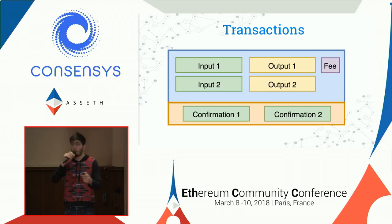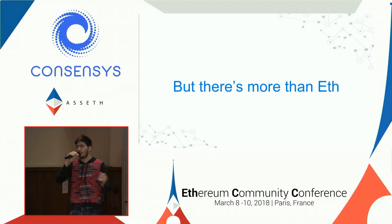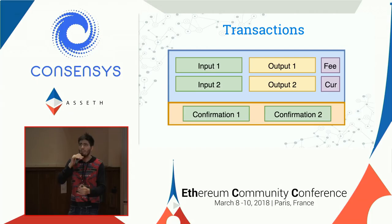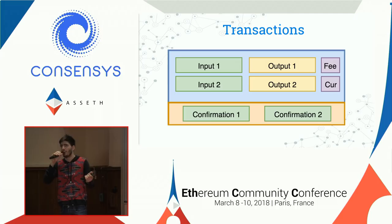With plasma child chain transactions we want to support more than ETH. With the UTXO model we just add one more field — currencies — and all of a sudden you can support ETH and ERC-20s, and eventually pretty much any currency down the road.